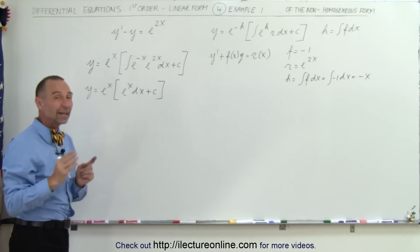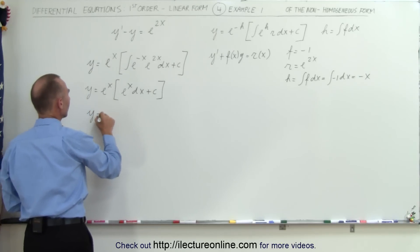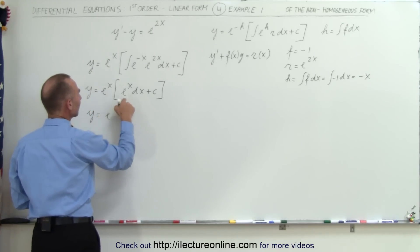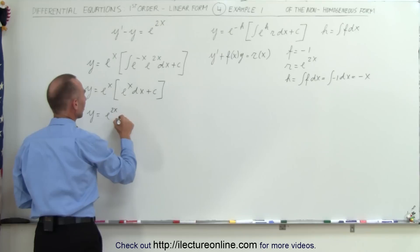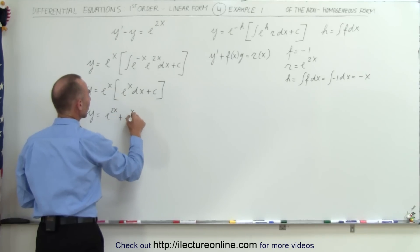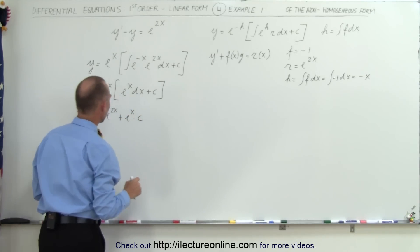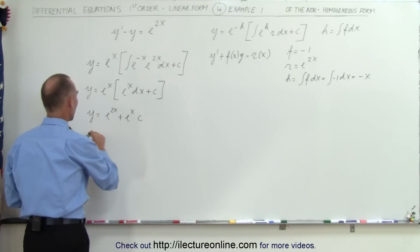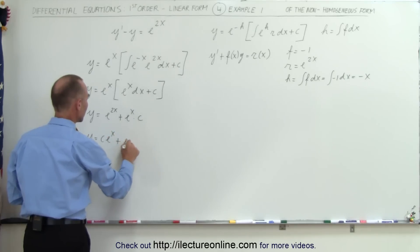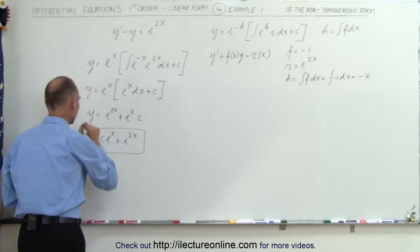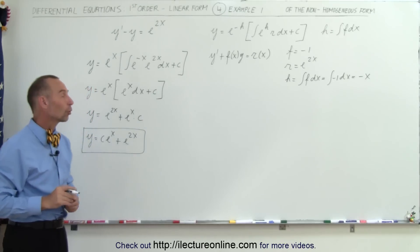So now we can go ahead and multiply this through, so now we have y is equal to e to the x times e to the x equals e to the 2x plus e to the x times c. And so simplifying that, we have y is equal to c e to the x plus e to the 2x, and that would then be the solution to our original differential equation.